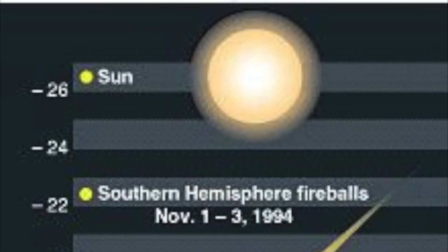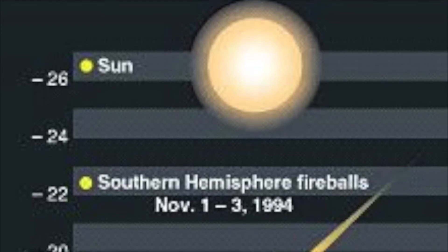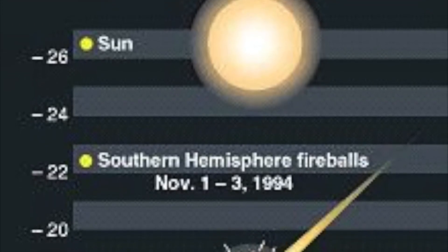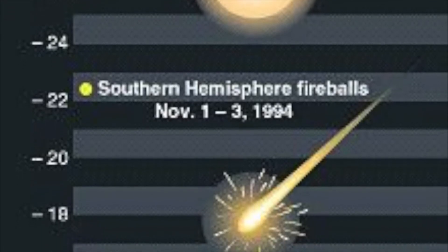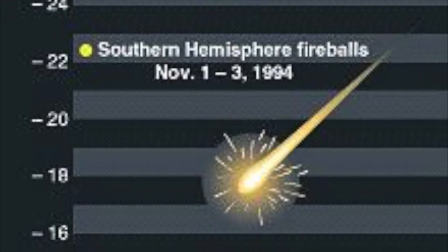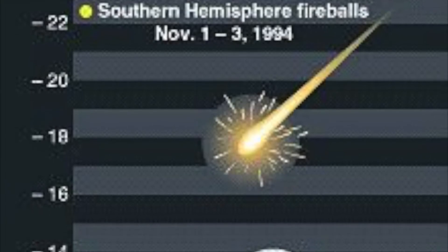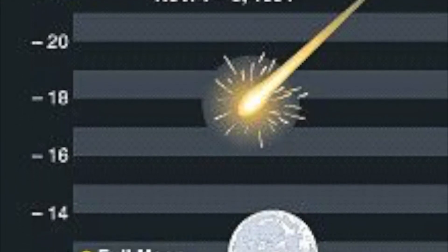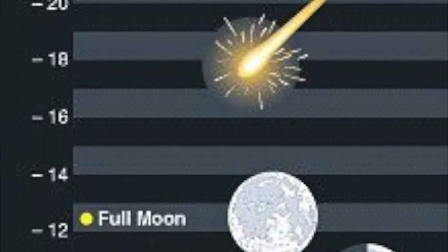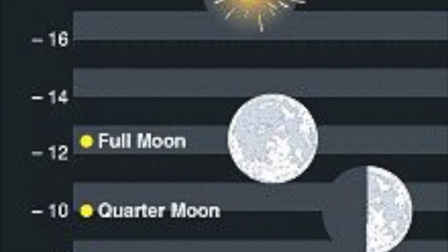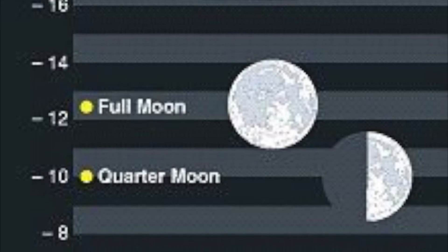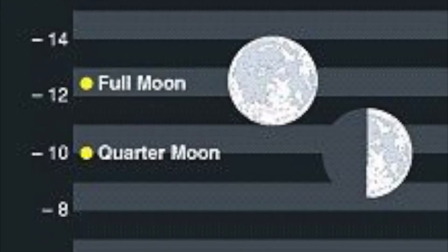Here we can see a full scale of the apparent magnitudes of common celestial objects and phenomena. The Sun, being the closest star to us, has an apparent magnitude of negative 26. This makes it almost 13 billion times brighter than Sirius, the brightest star in the night sky. Even a full moon with an apparent magnitude of negative 12 is almost six times as bright as a quarter moon, whose apparent magnitude is negative 10.